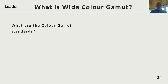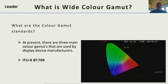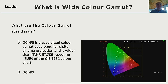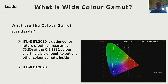So what are colour gamut standards? At present, there are three main colour gamuts used by display device manufacturers. The first is BT.709, which is what television has used for many years. There is also a standard for digital cinema, DCI P3, which is slightly wider than 709. Finally, the new UHD standards come with a new colour space, REC 2020, which is designed for future-proofing and covers up to 75.8% of the CIE colour chart.